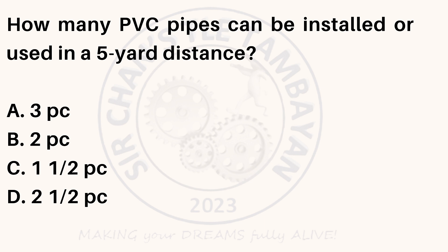How many PVC pipes can be installed or used in a 5-yard distance? A. 3 PC. B. 2 PC. C. 1½ PC. D. 2½ PC.